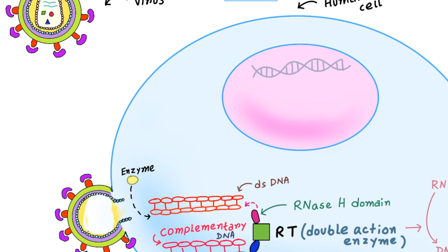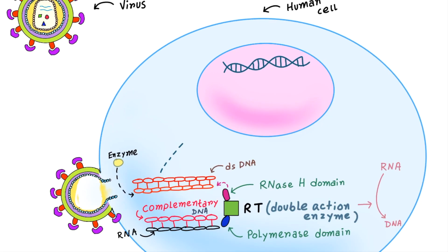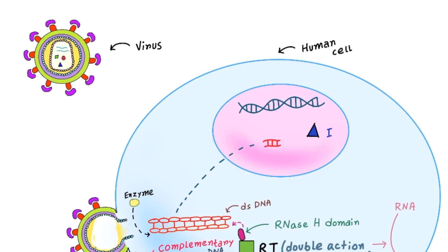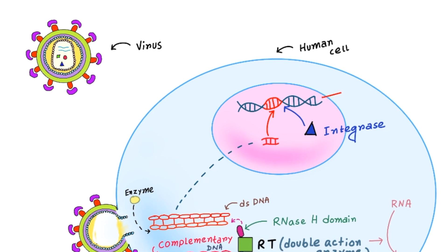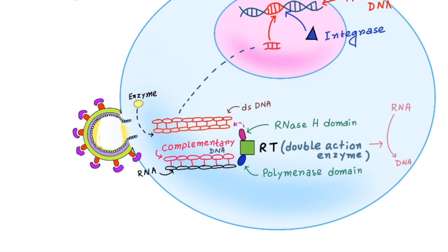Another enzyme reads the single-stranded DNA and makes complementary DNA, forming a double-stranded DNA, which is then transferred to the nucleus. The next enzyme is integrase, which cuts the human DNA at multiple points and integrates the viral DNA into our DNA, then stitches it together. This human DNA is now called proviral DNA. Once viral DNA is integrated into human DNA, it remains forever — no drugs can remove it, which is why once you are HIV positive, you are always HIV positive.